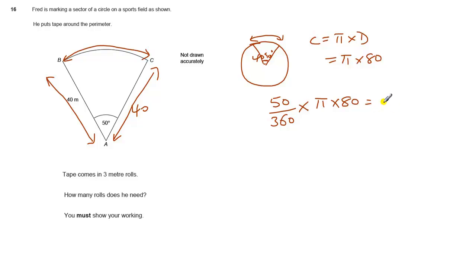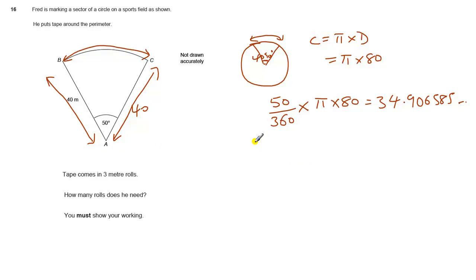If we type that into the calculator, we get about 34.906585. So that's the distance around that arc. To that, we need to add the two 40s, so we add 80. That gives us 80 plus 34.9, which gives us 114.9. That's the distance around the whole shape.